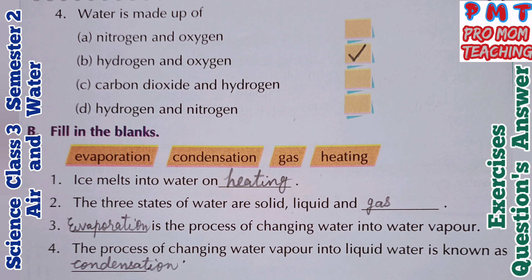Third: evaporation is the process of changing water into water vapor. Fourth: the process of changing water vapor into liquid water is known as condensation.